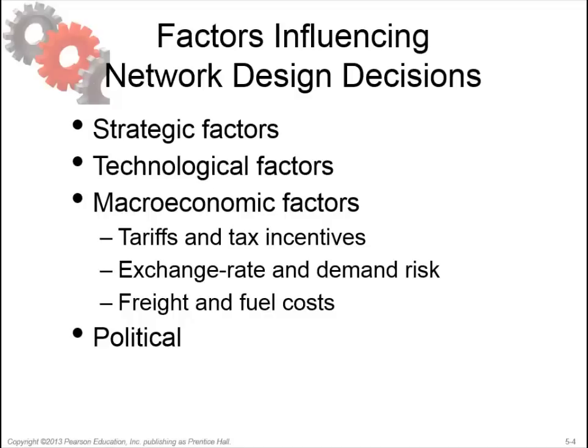The fourth factor influencing supply chain network design is political factors. The political stability of a country under consideration plays a significant role in location choice. Companies prefer to locate facilities in politically stable countries where the rules of commerce and ownership are well defined. While political risk is hard to quantify, there are indices like the Global Political Risk Index that companies can use when investing in emerging markets.